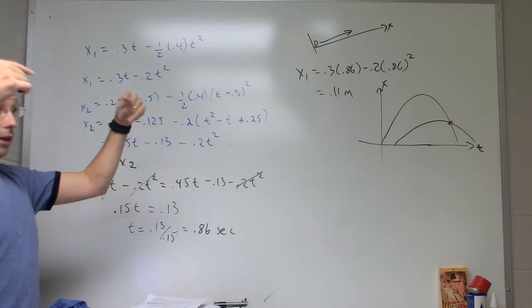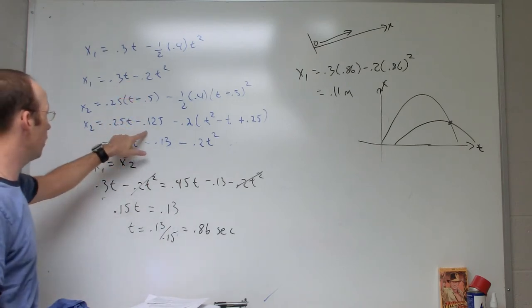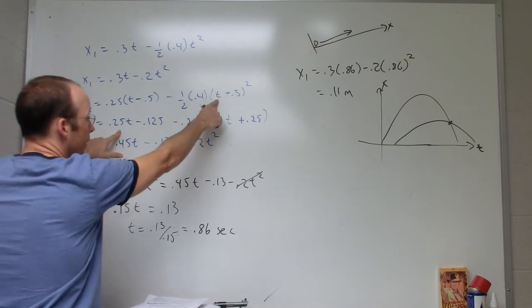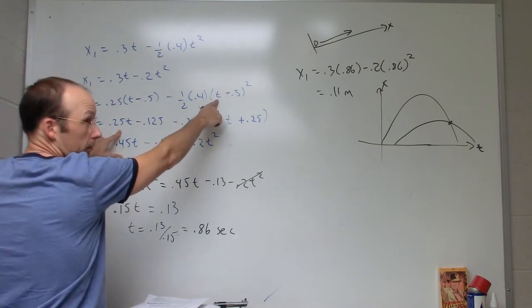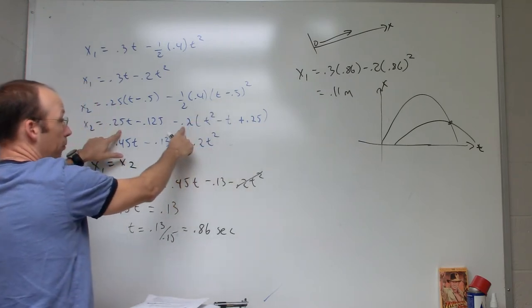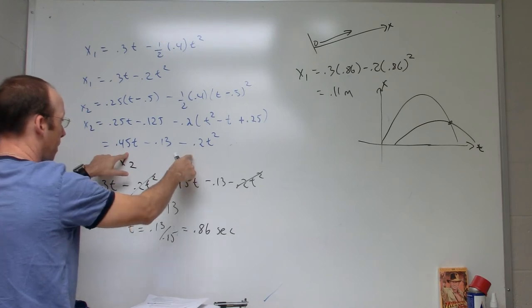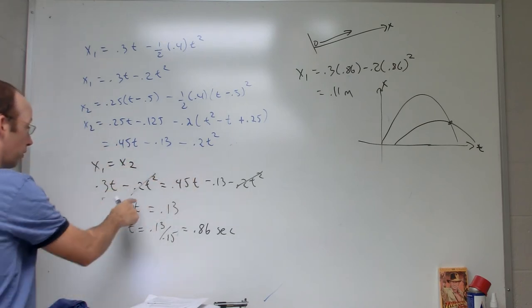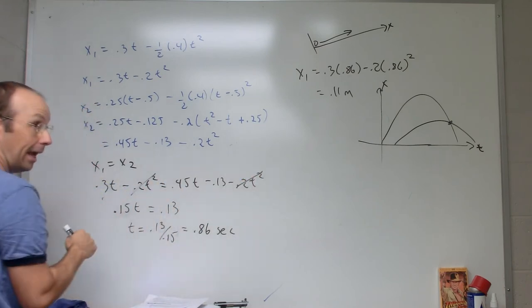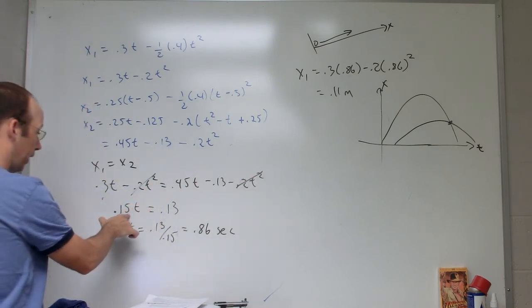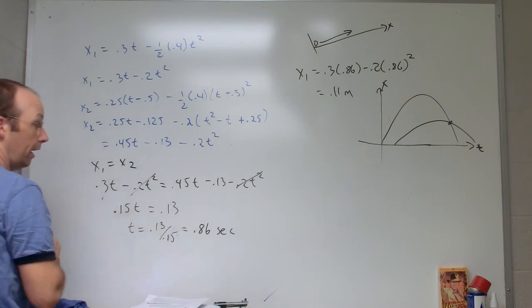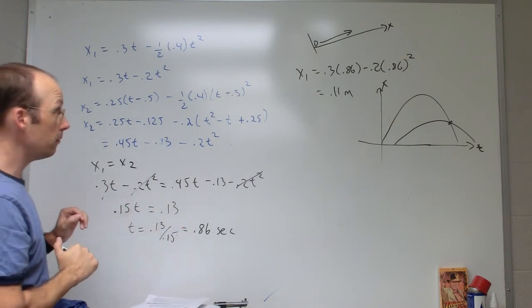Now you just do exactly what you did before: you set those two x's equal to each other and find the time. All I do is multiply this out to get that, and this I have to multiply (t minus 0.5) squared. I get that, and then I multiply by the negative 0.2. I set the two equal to each other—that's x1, that's x2. The t squared is canceled because they have the same acceleration, and so I get something a little bit simpler. I solve for t and get 0.86 seconds.